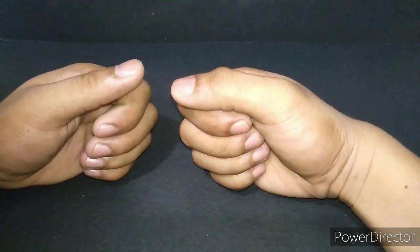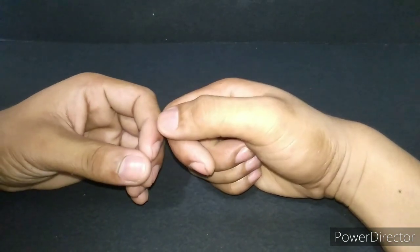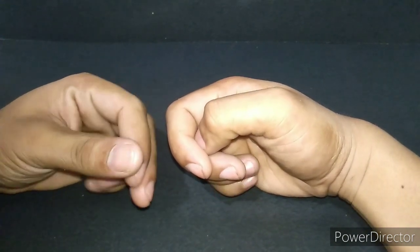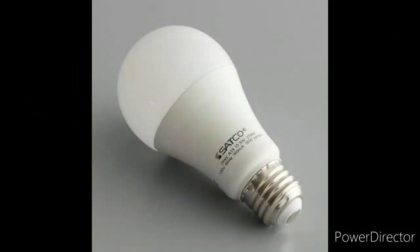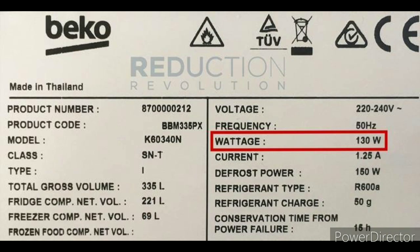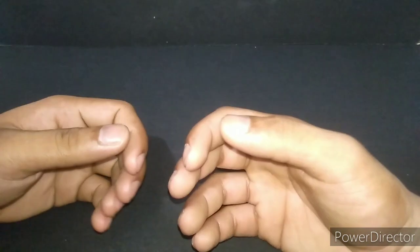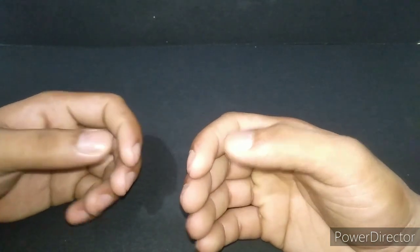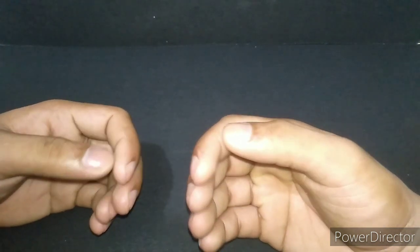Welcome back viewers. Before we proceed with our calculations, let us first record the power consumptions of each of our appliances. It is usually found at the back of the device. Here are some examples. So those are the labels that we must find within our device in order to determine its power consumption. Now, we can begin with our calculations.